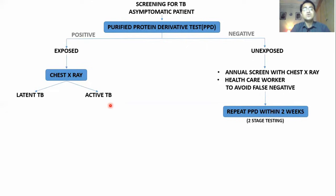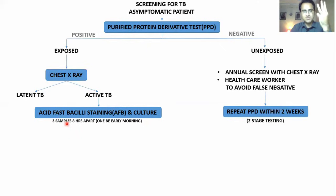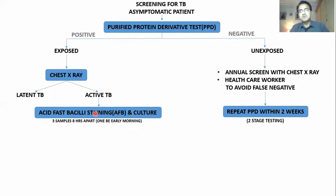If the patient has active TB, a chest X-ray alone is not enough to diagnose active TB. You take their sputum and perform acid-fast bacilli staining plus acid-fast bacilli culture. You take three samples, a minimum of eight hours apart, and one must be an early morning sample. You stain and culture them. Culture usually takes six weeks, but staining takes less time.